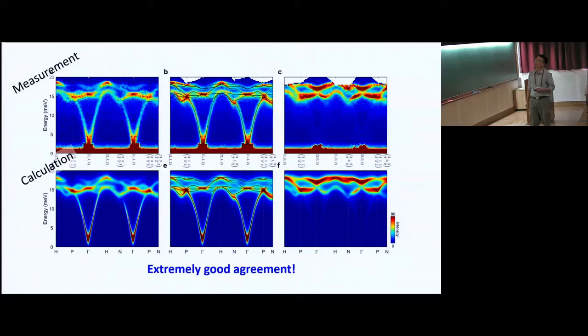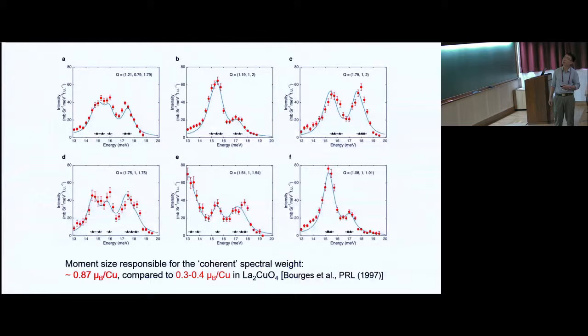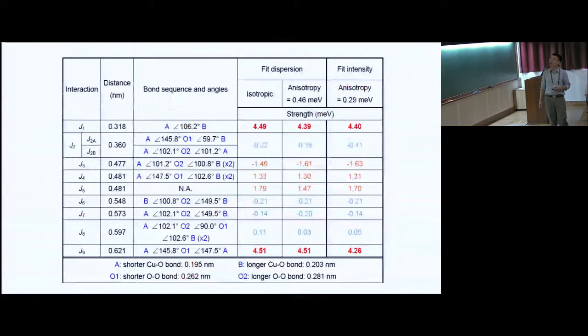And so upon seeing this, we know that the model really works. And then we know that there's a chance to use this model to guide us in the search of topological band structure. And just to tell you how good it works, and I'm showing you more conventional cuts, so constant momentum, intensity versus energy cuts, and at many different positions, and they fit globally, works very nice. And it turns out that the moment size here is much bigger than the case in the high-Tc copper parent compound, which is another indication that the magnetism is very classical.